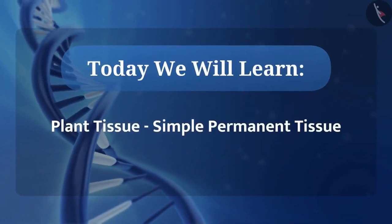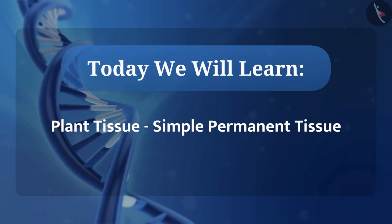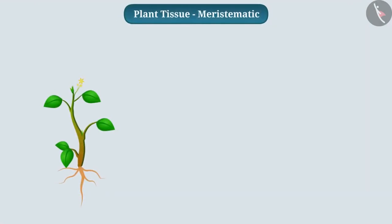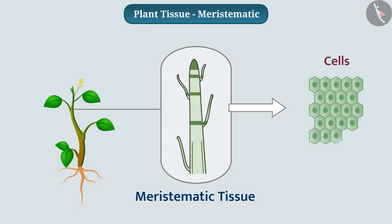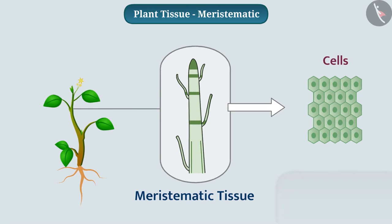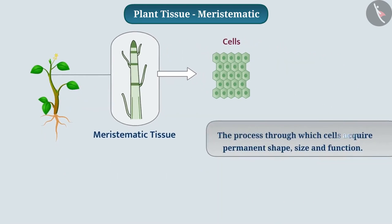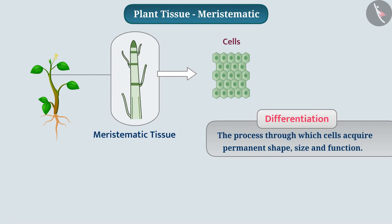We will learn about plant tissue — simple permanent tissue. In the previous video, we learned that the cells of meristematic tissue keep dividing throughout their life. But as they grow and mature, their properties gradually change. After complete growth, these cells perform a specific function at a specific location and lose the power to divide. To perform a specific function, the cells acquire permanent shape, size and function. This process is called differentiation. Such cells form permanent tissue.